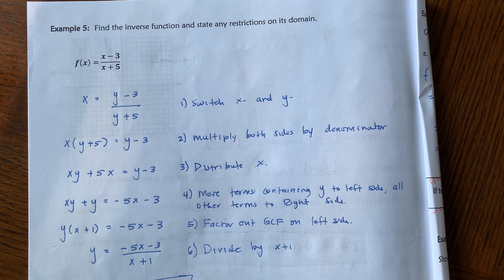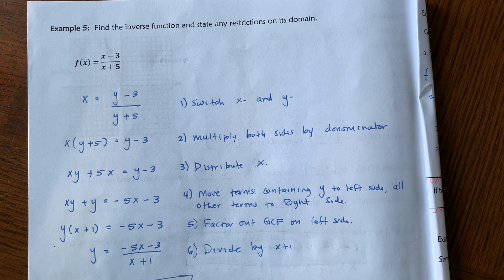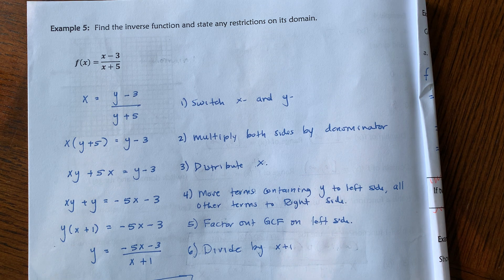Continuing Chapter 1, Lesson 7, Example 5: find the inverse function and state any restrictions on its domain. So we have f of x equals x minus 3, all divided by x plus 5.